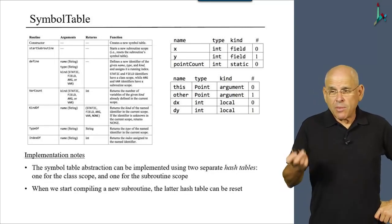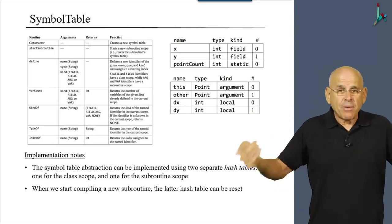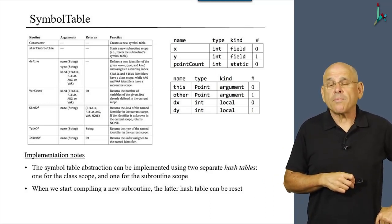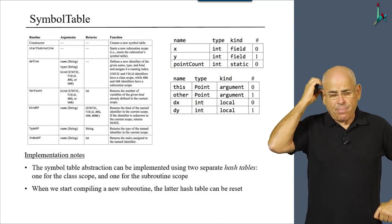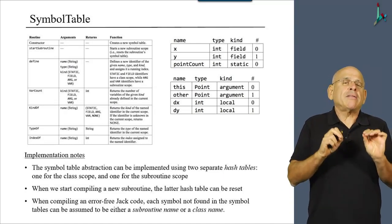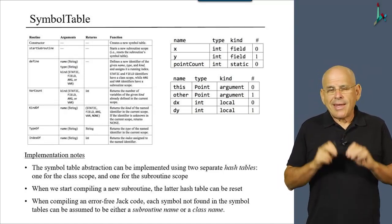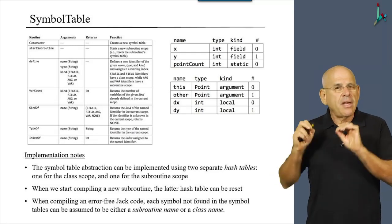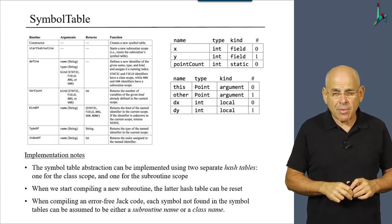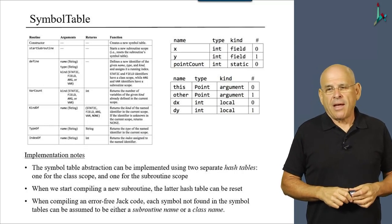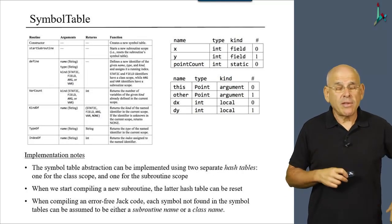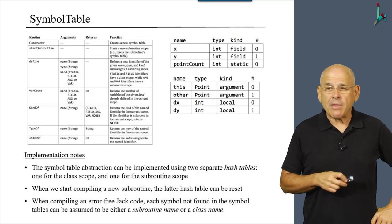And so we can use one hash table to represent the class scope and another hash table for representing the subroutine scope. When we start compiling a new subroutine, the latter hash table can be emptied and reset and that's basically what we have to do. Now, here's another tip which is relevant for the compiler in general. When you compile error-free Jack code, each symbol which is found neither in the subroutine symbol table nor in the class table must be a symbol that represents either a subroutine name or a class name. So that's a useful tip that will serve you well when you write the compiler.